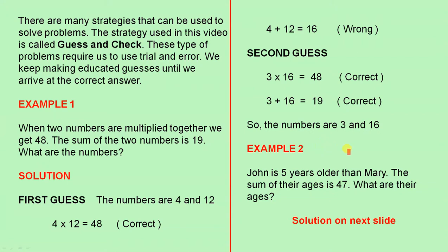Example 2. John is 5 years older than Mary. The sum of their ages is 47. What are their ages? Let's have a look. The solution on the next slide.